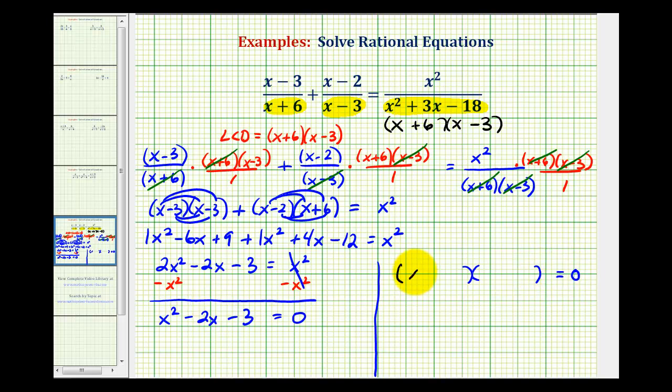The factors of x squared are x and x. The factors of negative three that add to negative two would be negative three and positive one. This product will be equal to zero when x is equal to three because that would make this factor equal to zero.